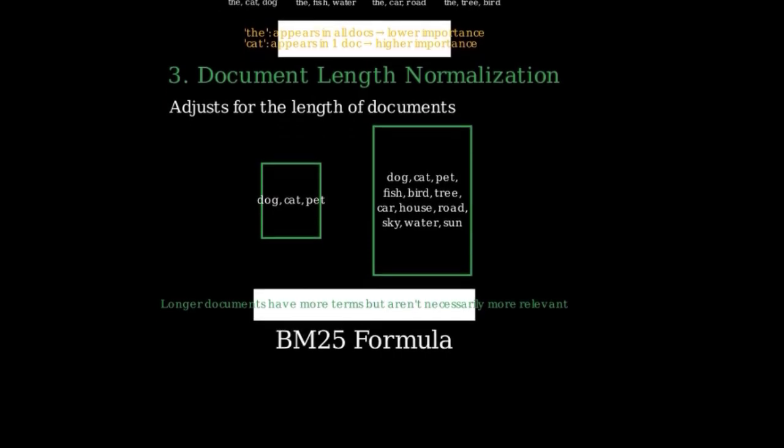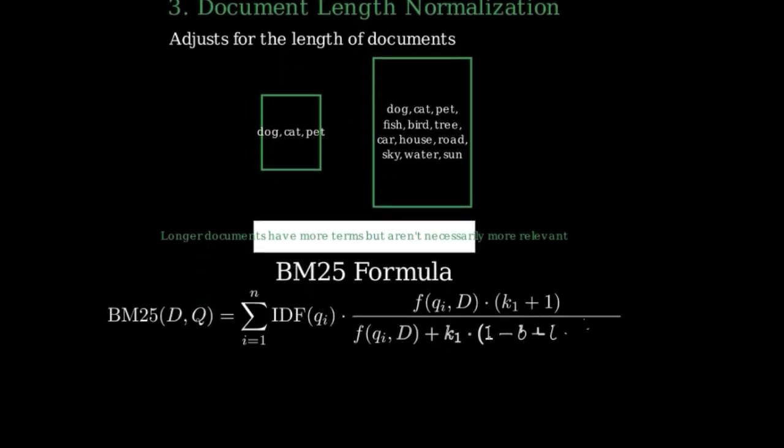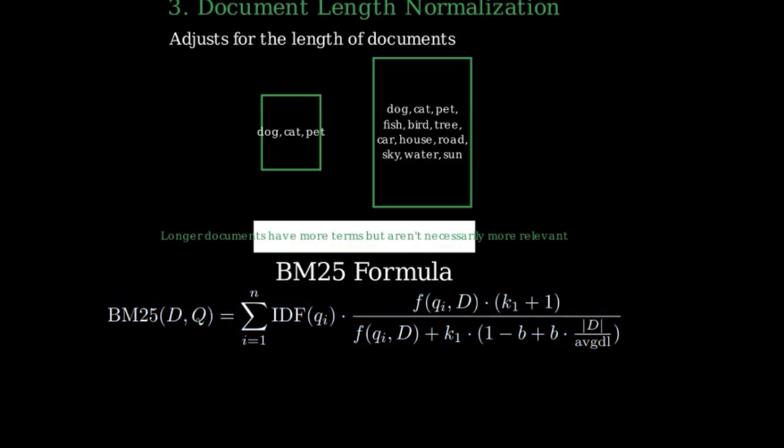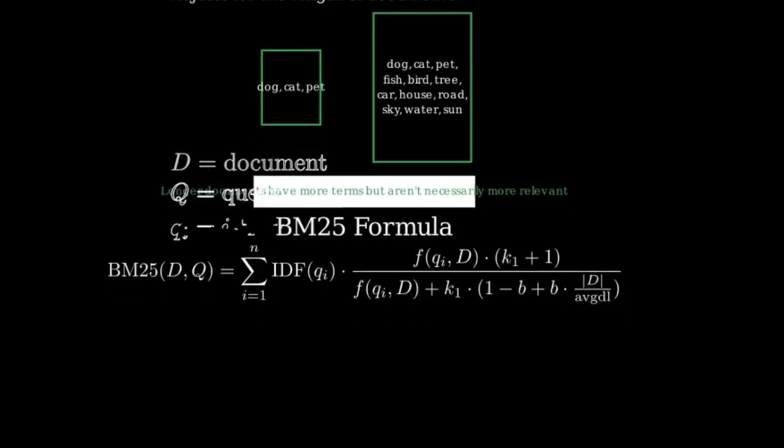Now, let's look at the BM25 formula. The formula for BM25 is the sum, from i equals 1 to n, of the inverse document frequency of each query term q_i, multiplied by the fraction where the numerator is the term frequency of q_i in document D times k_1 plus 1, and the denominator is the term frequency of q_i in document D plus k_1 times the quantity 1 minus b plus b times the length of document D divided by the average document length.